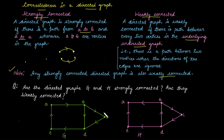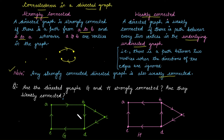Now we need to determine whether these two graphs are strongly connected or weakly connected. To check if graph G is strongly connected, the procedure is to find a path from A to B, A to C, A to D, A to E, and then from B to A, B to C, B to D, and so on for all vertices. Rather than checking each distinct pair individually, it is better to check if there is a circuit that covers each vertex following the given directions.